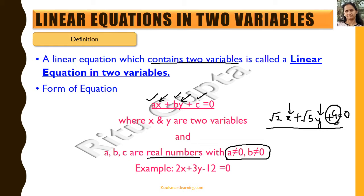An example where the constant term is absent would be 4x plus 2y equals zero. Here c is essentially zero, but this still remains a linear equation in two variables.